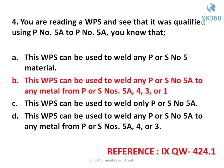Question number 4. You are reading a WPS and see that it was qualified using P number 5A to P number 5A; you know that — options are: A. This WPS can be used to weld any P or S numbers 5A, 4, 3, or 1. C. This WPS can be used to weld only P or S numbers 5A. D. This WPS can be used to weld any P or S numbers 5A, 4, or 3. Answer is option B. This WPS can be used to weld any P or S numbers 5A to any metal from P or S numbers 5A, 4, 3, or 1.